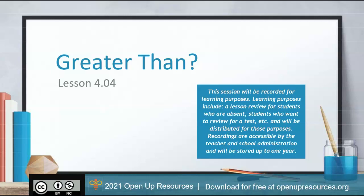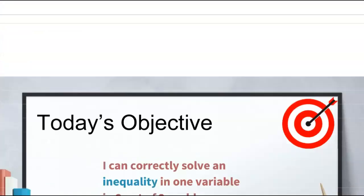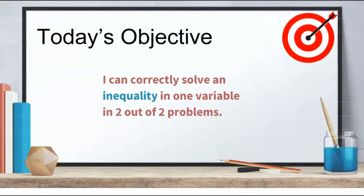Today we're looking at lesson 4.04, greater than. Today's objective is: I can correctly solve an inequality in one variable in two out of two problems. We're going to talk about properties that we can use to solve inequalities, like we talked about properties of equalities a few lessons ago. Today we'll look at what properties we can use for inequalities and how they might be different.